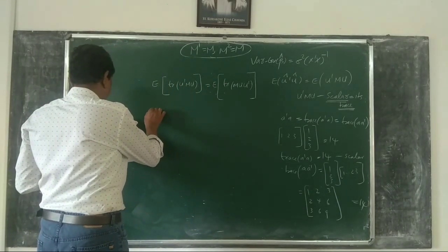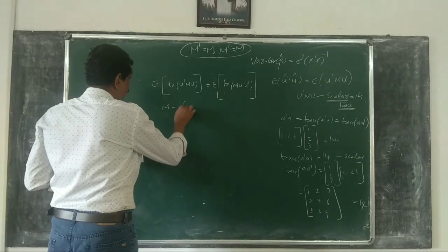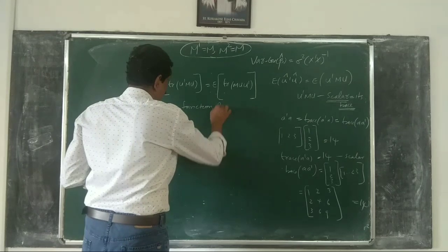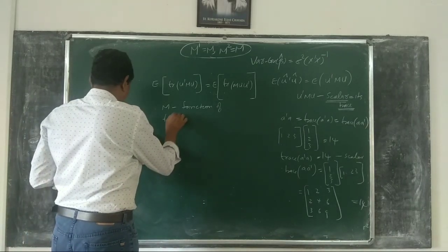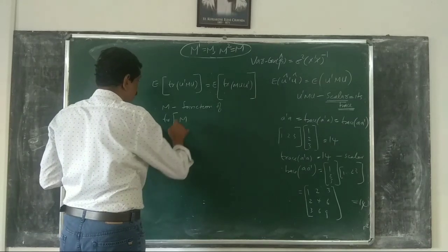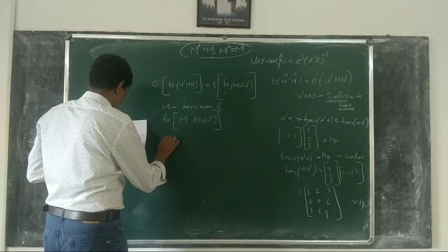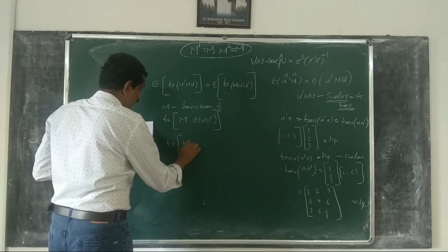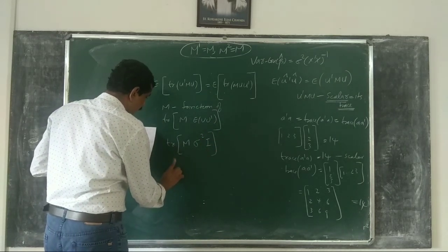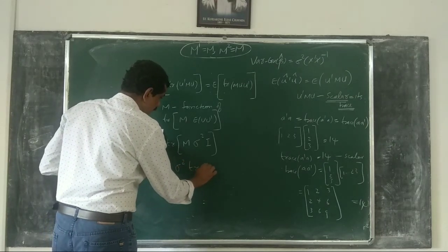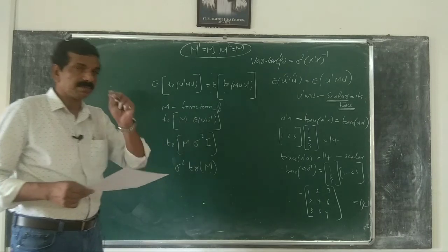Since M is a function of X (M equals I minus X(X'X)^{-1}X'), it is treated as a constant when taking expectations. So the expected value of trace(Muu') equals trace(M times E[uu']), which equals trace(M times sigma-squared*I) equals sigma-squared times trace(M), since sigma-squared is a scalar.